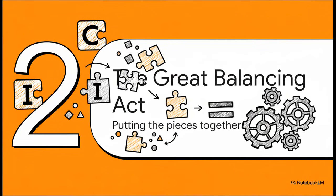All right, so we have met our players: C, I, and G — consumption, investment, and government spending. Now this is where it gets really cool, because they all have to fit together perfectly inside this sort of master equation for the economy. Let's see how that works.